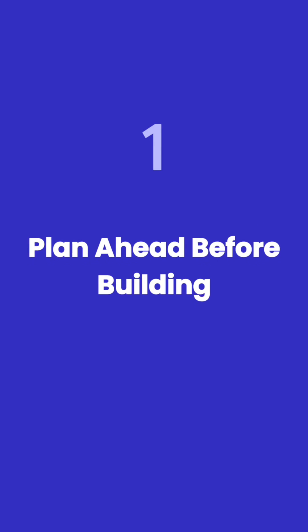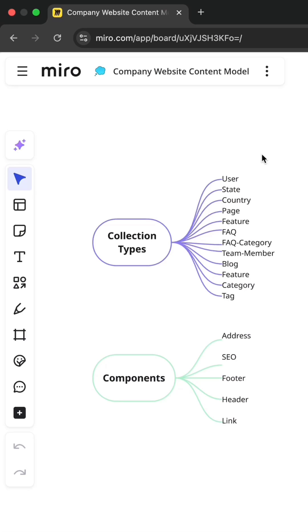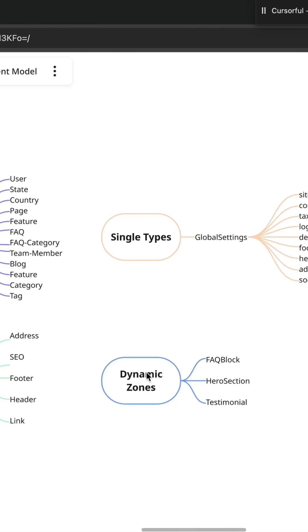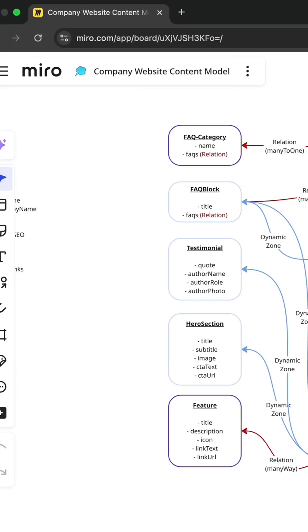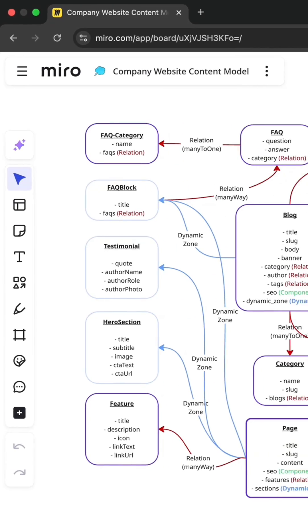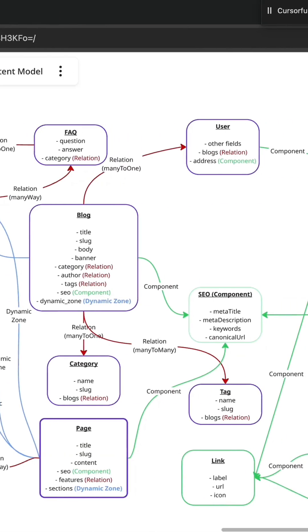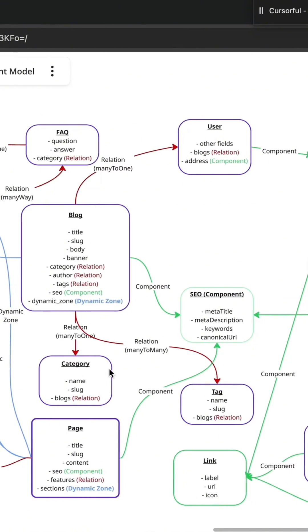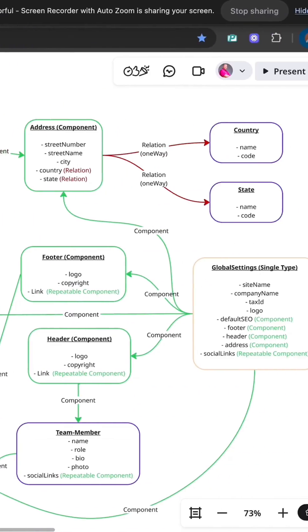Number 1: Plan ahead before building. First and foremost, outline your content types and their relationships. You could use Miro, Lucidchart, Figma, and so on. This will ensure you have a plan before building your product.